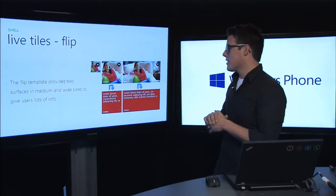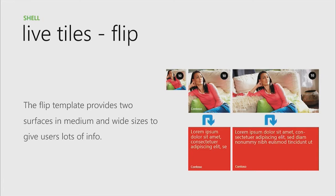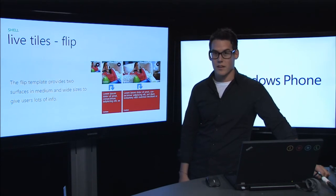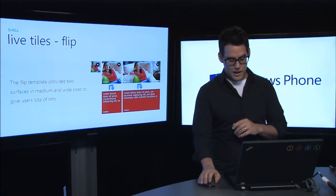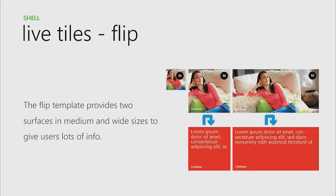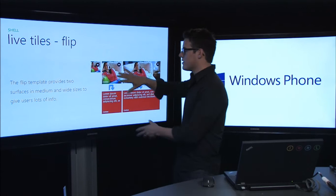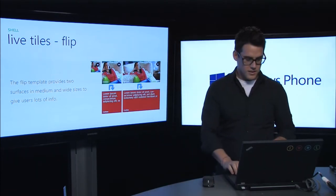First there's Flip. The Flip template provides two surfaces in medium and wide sizes to give users a lot of info. You have one side of the tile with text, content, and a title — then the tile flips over to reveal an image or other content on the back. A good use would be a weather app that displays the current temperature on the front and the five-day forecast on the back, or a bus tracking app that shows stop and arrival times on the front and a map of the current bus location on the back. A bad use is branding on the front and data on the back — both sides should show the same type of information in different contexts.